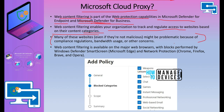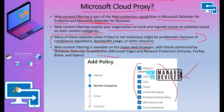Why do we need web filtering? Many websites might be problematic due to compliance regulations, bandwidth usage, or other concerns. Different categories are available, and some may not be required for your business — so you can block content from those websites. Web content filtering, or Microsoft Cloud Proxy, is available on all major web browsers. For Edge, this is done via Microsoft Defender SmartScreen, and for other browsers like Chrome, Firefox, Brave, and Opera, it uses a technology called network protection.